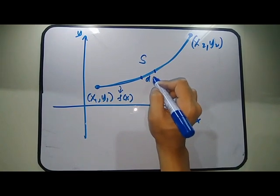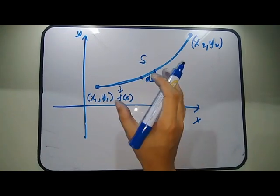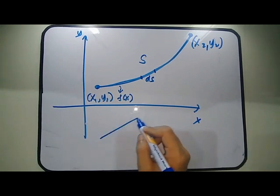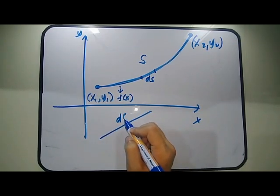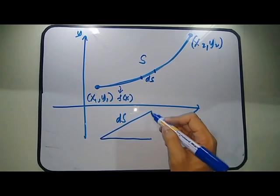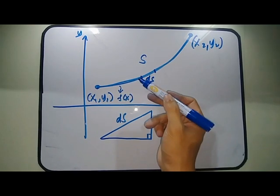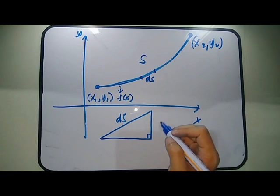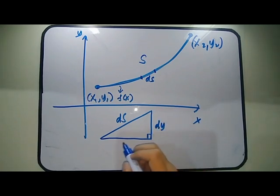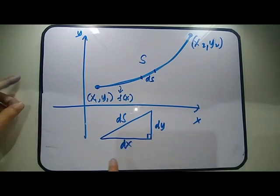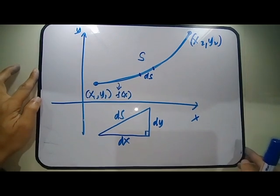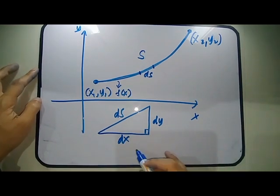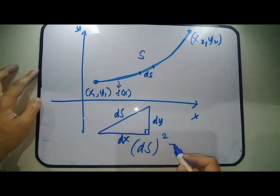If we zoom in on that strip, it becomes practically straight. The slope of that differential S is given by a small triangle, where we have differential Y for the height and differential X for the base. Using the Pythagorean Theorem, dS² = dX² + dY².